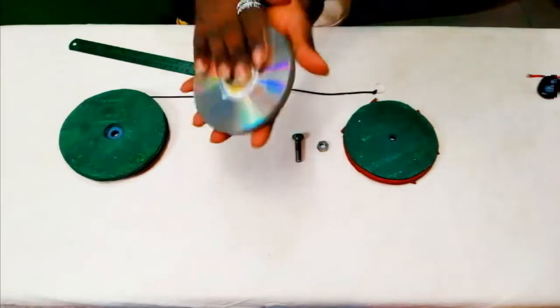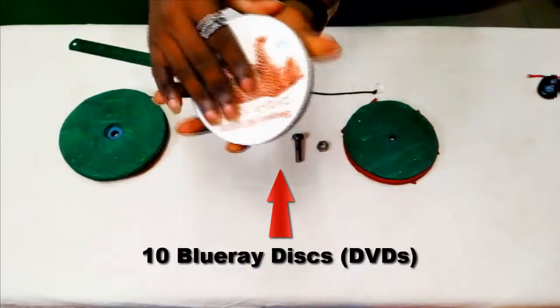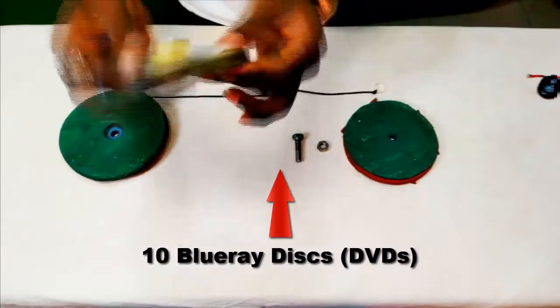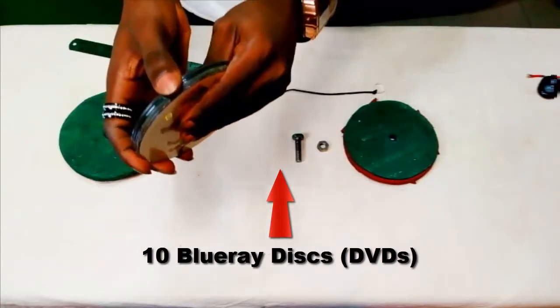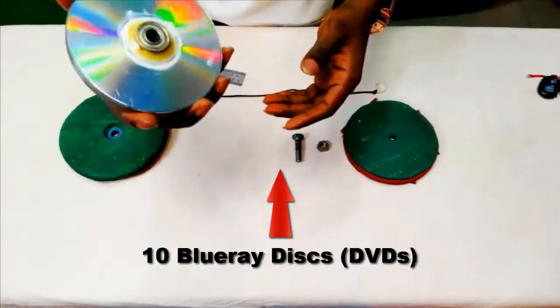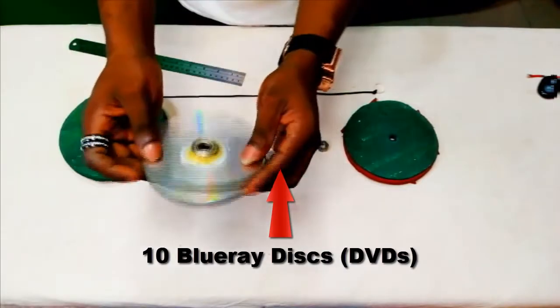Then the middle part, I made with discs. All these discs. So I made like 10, I glued 10 discs together to make this thick part of The Lazy Susan.